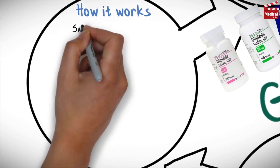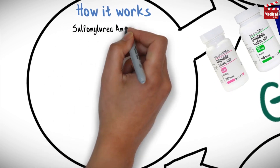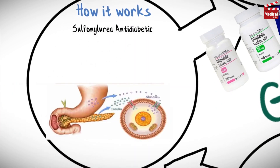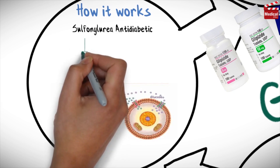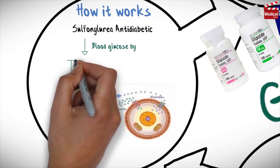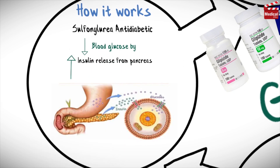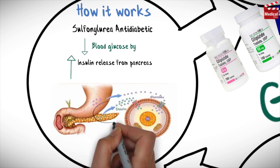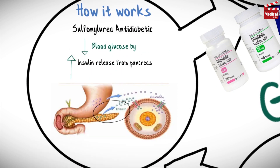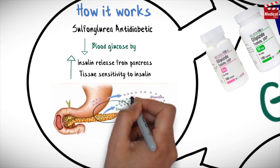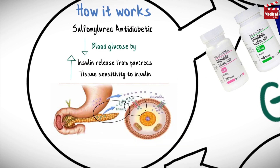Glipizide is a sulfonylurea antidiabetic agent. It decreases blood glucose by stimulating insulin release from the pancreas and by increasing tissue sensitivity to insulin.